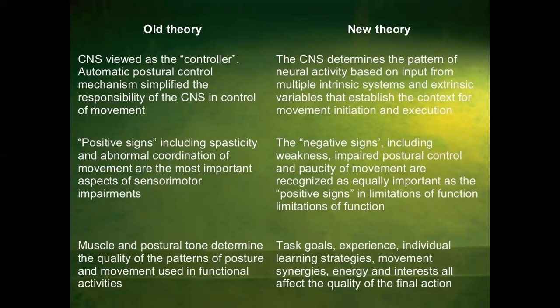The old theory says that positive signs, including spasticity and abnormal coordination of movement, are the most important aspect of sensorimotor impairment. The new theory says that negative signs, including weakness, impaired postural control, and paucity of movement, are recognized as equally important as the positive signs and limitation of function.